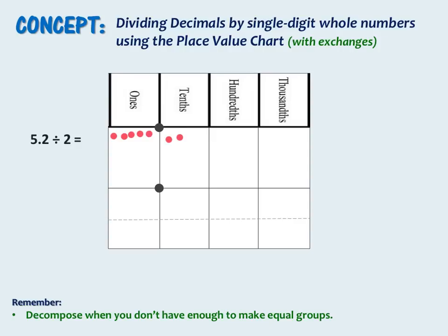Now we are going to divide or separate those into 2 groups. Beginning with our ones place, we place 4 ones — 2 in each group — and we have 1 left over. We cannot separate 1 into 2 groups, so we need to unbundle it.